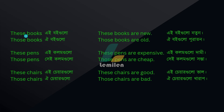These means 'A guloo'; those means 'OI guloo.' These books: 'A boi guloo.' These pens: 'A column guloo.' These chairs: 'A chair guloo.' Those books: 'OI boi guloo.' Those pens: 'OI column guloo' or 'bashe I column guloo.' Those chairs: 'OI chair guloo' or 'bashe I chair guloo.'